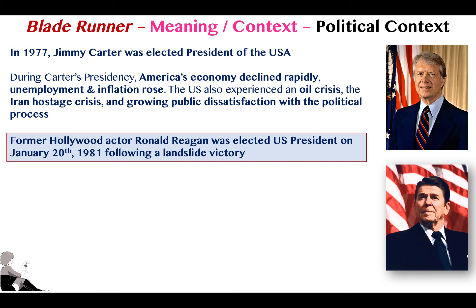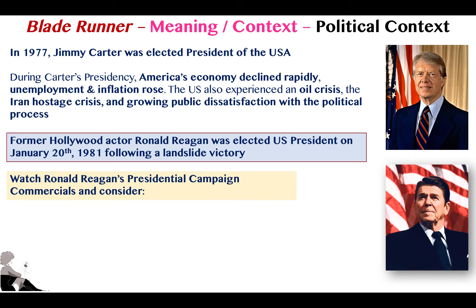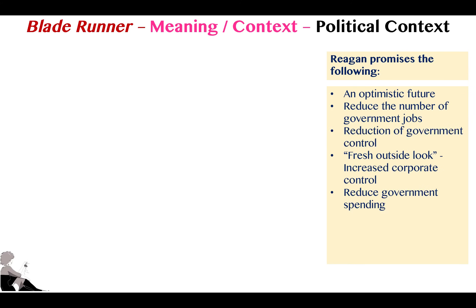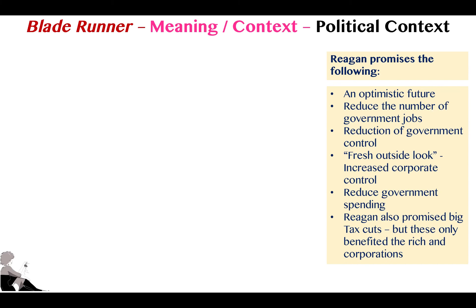Very similar to modern times with the election of Donald Trump, American voters reacted by electing a more populist president — former film star Ronald Reagan. In the lesson we look at his campaign commercials, where he basically promises an optimistic future: reduction of government jobs, reduction of government control, and a fresh outside look. What he means is he's going to invite private corporations and business people into the democratic system to help make the economy run more efficiently.